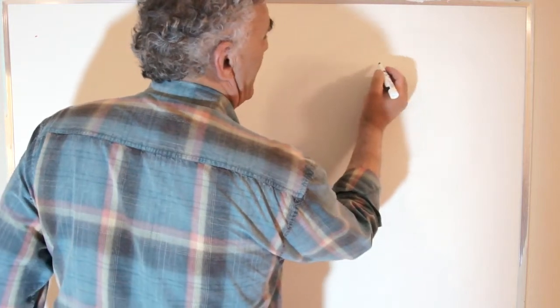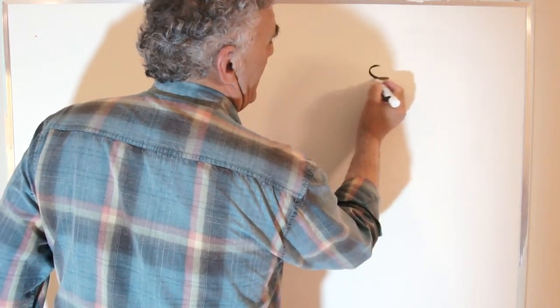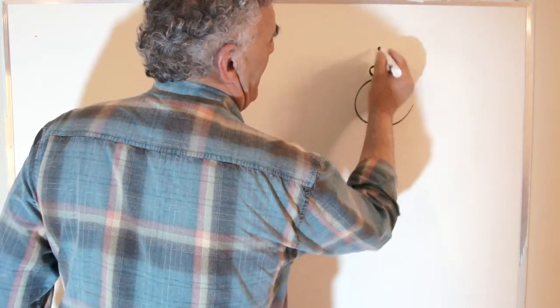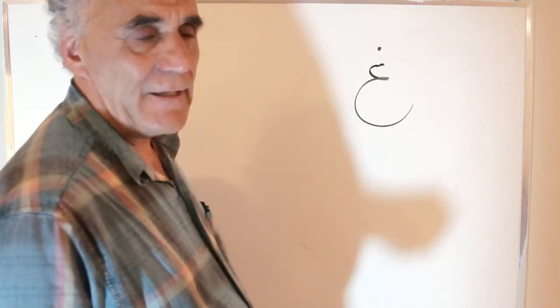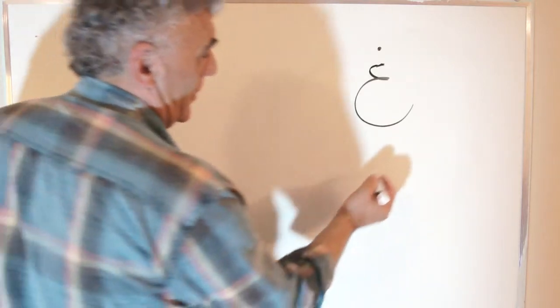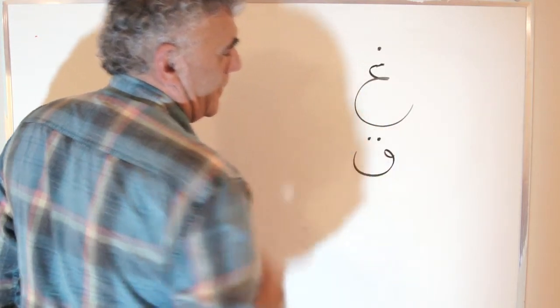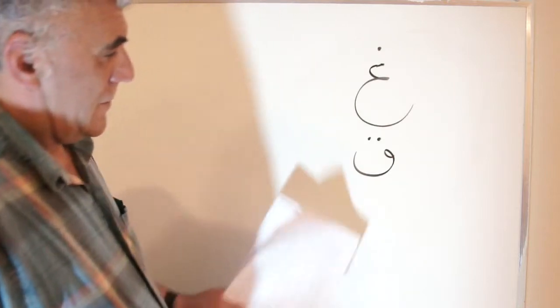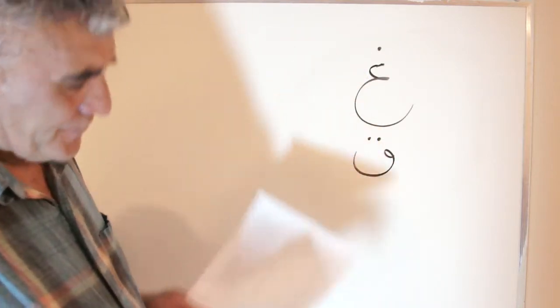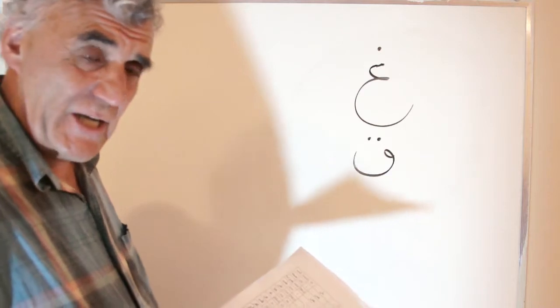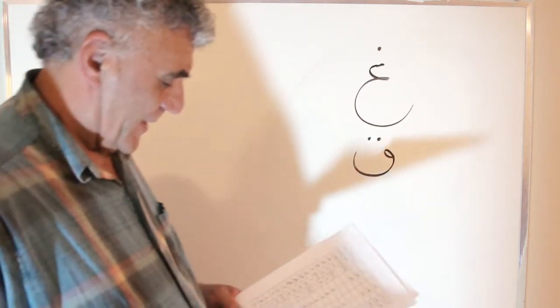There are two other letters — one was this form but with a dot on top. I have used the letters 'gh' to explain that in transliteration.